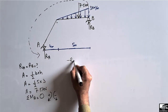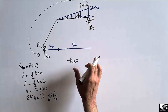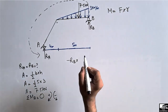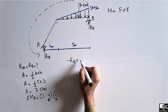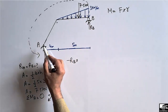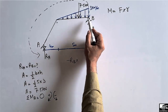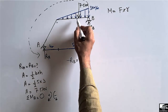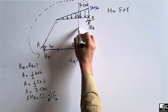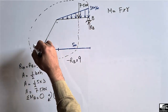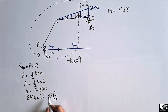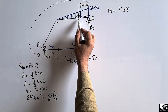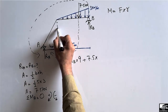Since moment equals force times moment arm, the term for R_B is: minus R_B multiplied by its moment arm, which is the horizontal distance from B to A — that is 5 + 4 = 9 meters. The concentrated load of 7.5 kN acts downward and creates a clockwise moment about A, so it is taken as positive: plus 7.5 times its moment arm.